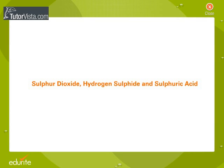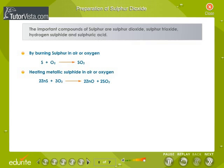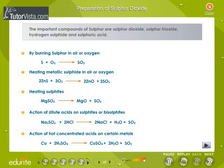Sulfur dioxide, hydrogen sulfide, and sulfuric acid. The important compounds of sulfur are sulfur dioxide, sulfur trioxide, hydrogen sulfide, and sulfuric acid.